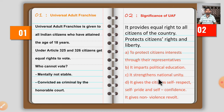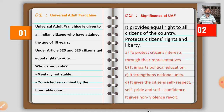The first point is Universal Adult Franchise. Universal Adult Franchise is given to all Indian citizens who have attained the age of 18 years. Any citizen who attains the age of 18 years gets the right to vote. When you are 18 years old, you will get the voter ID card and will be able to vote for your representatives. This right is given by the Constitution under Articles 325 and 326.